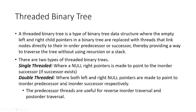In the case of double threaded binary tree, both left thread and right thread exist. If there is no left child, a left thread exists; if there is no right child, a right thread exists. The predecessor threads are useful for reverse in-order traversal and post-order traversal, while single threaded binary tree is helpful for in-order traversal.